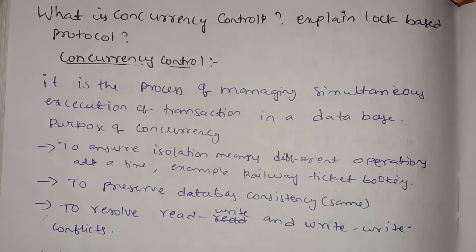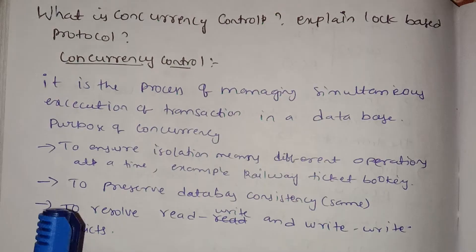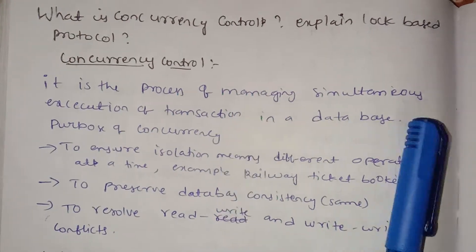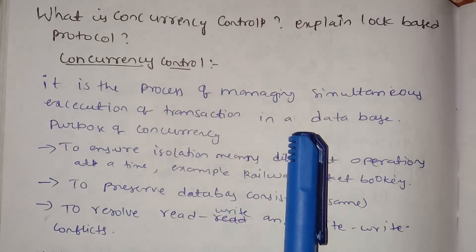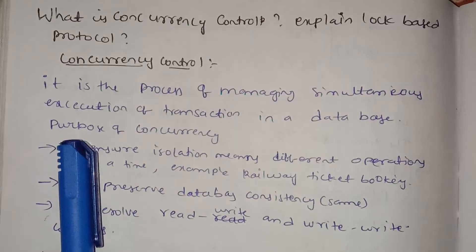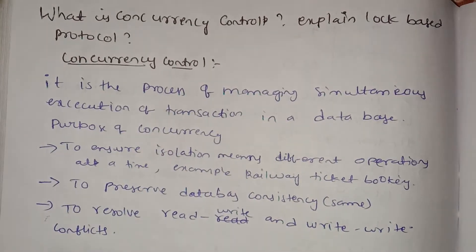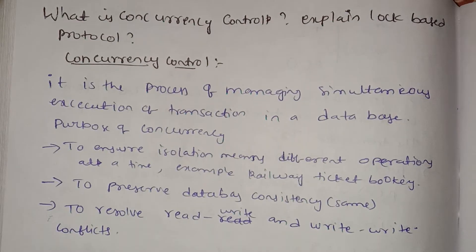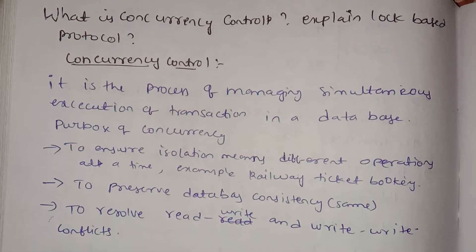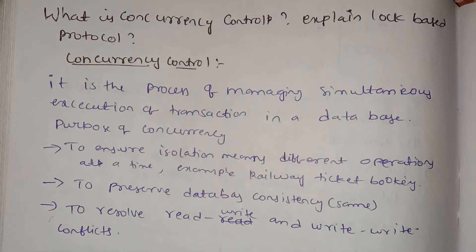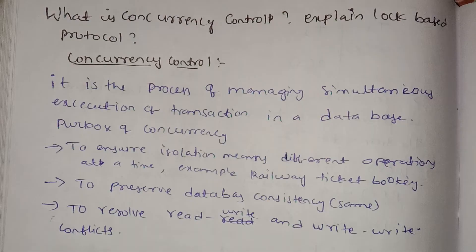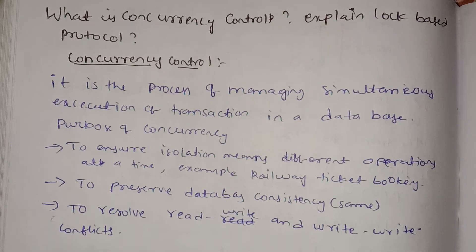Concurrency control is the process of managing the simultaneous execution of transactions in a database. The purpose of concurrency is the process of executing transactions.